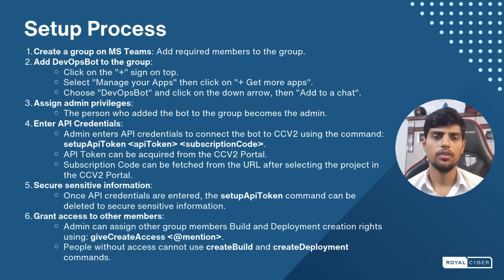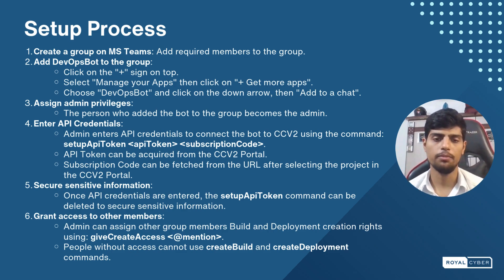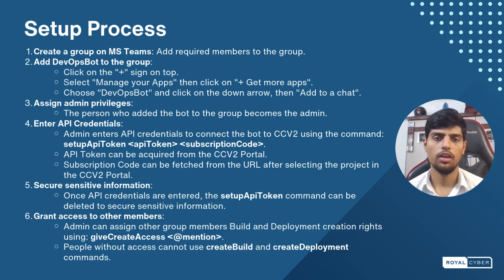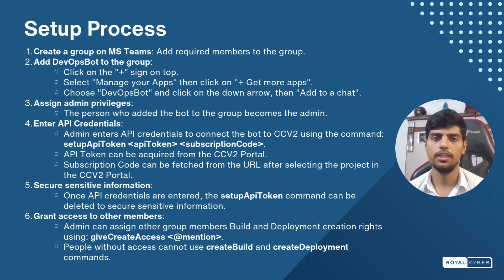The setup process is fairly simple. Once the bot is added to the organization's Teams — which is a one-time process — it is accessible to all users of that organization. A group chat is created with all relevant members, and the bot, currently named DevOps Bot, is added. Whoever adds the bot becomes the admin. The admin then provides API credentials for the CCV2 platform, after which all participants can interact with the bot seamlessly.